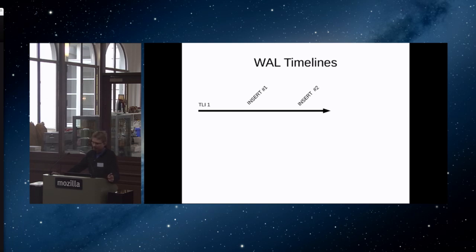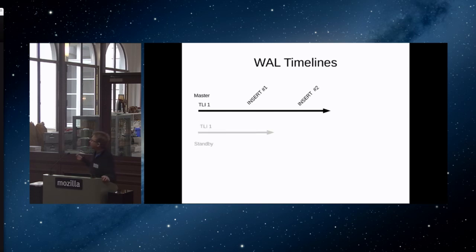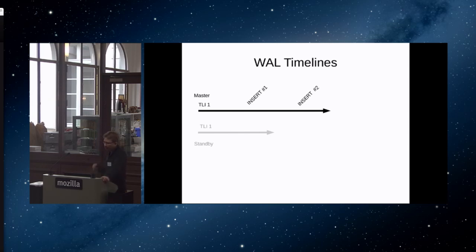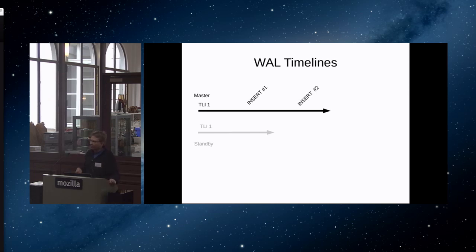I'm going to talk about WAL timelines. WAL is the transaction log in Postgres — the write-ahead log, that's what the acronym stands for. Whenever you do inserts, updates, or any operations, we always write a WAL record in the transaction log. When you have a master and standby, the standby follows the master's timeline. Every time you insert into the master, it gets copied to the standby with a small delay — it's always asynchronous. You can make the gap very small, down to milliseconds with a good network, but the standby will always lag behind the master.